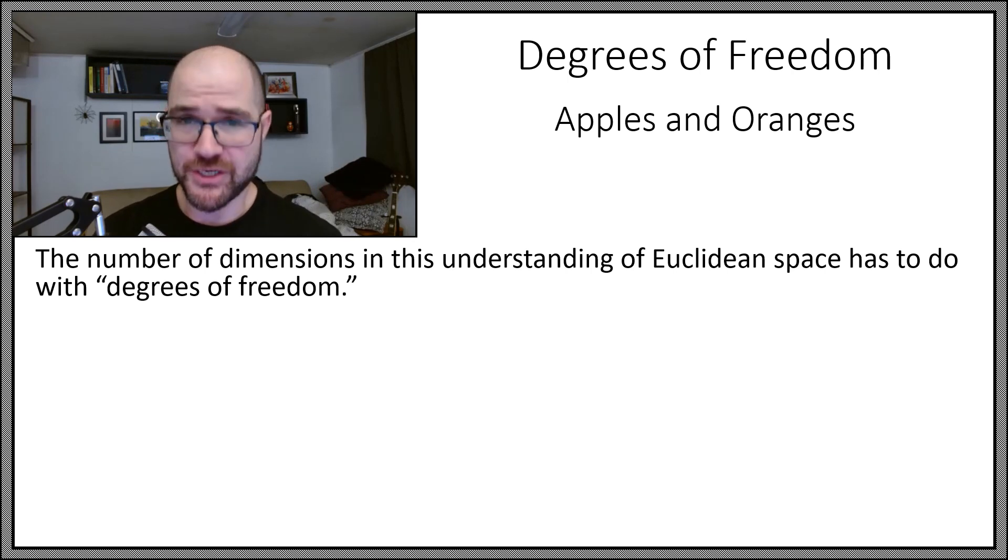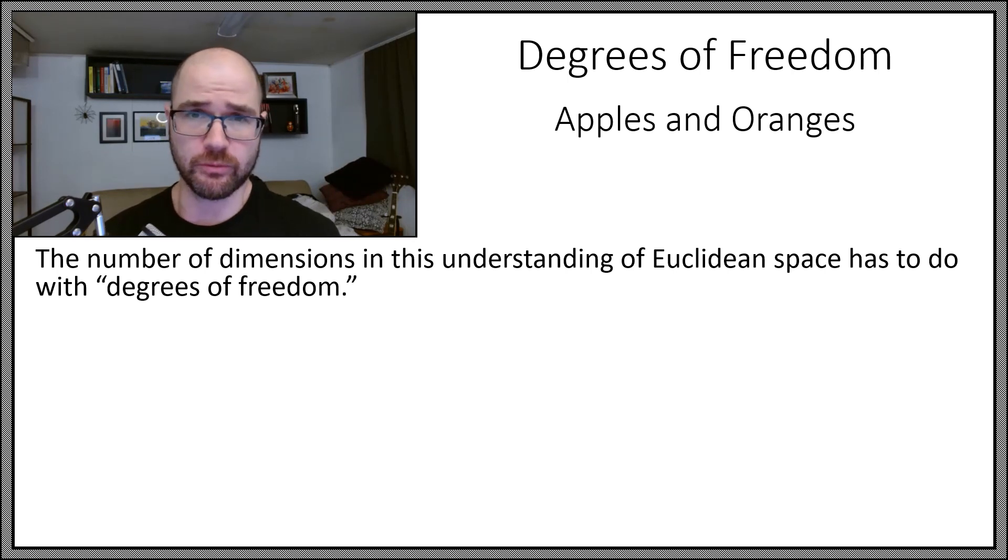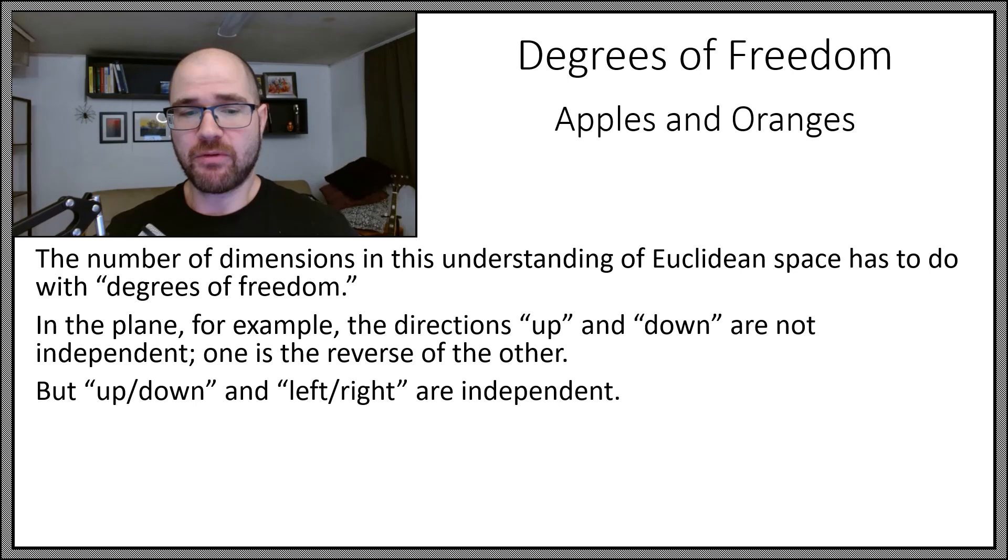So the number of dimensions in this sort of understanding of Euclidean space has to do with what are called degrees of freedom. In the plane, for example, up and down are not independent of one another. Moving up is the same thing as anti-moving down. But up, down, and left, right are independent.